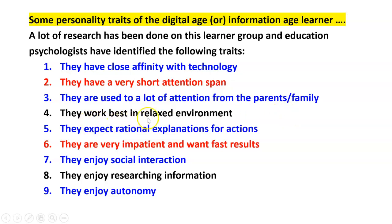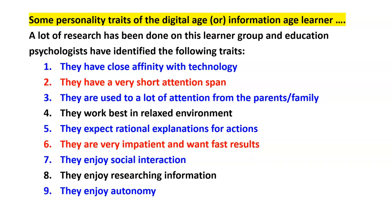They work best in a relaxed environment, so a strict environment will not be suitable for this type of student. They expect rational explanation for any action — if you expect them to do something, they want a clear explanation. They are very impassioned and want fast results. They want instant gratification — immediately they want to see the result. They are not bothered about the gestation period; they do not wait and do not have patience.